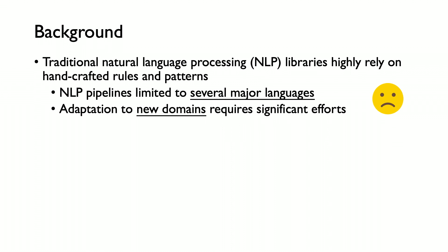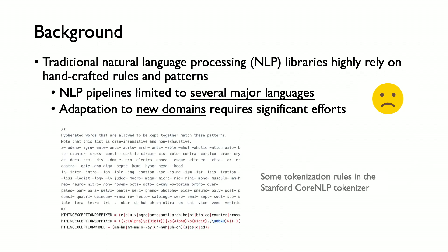The use of these rules and patterns has limited existing NLP pipelines to several major languages, such as English or French. And secondly, it makes adaptation to new domains much more difficult. Here are the tokenization rules used in the Stanford CoreNLP English tokenizer, most of which were written by Professor Chris Manning over the last decade — giving you an idea of how difficult it is to craft all these rules and patterns.